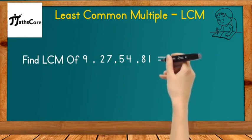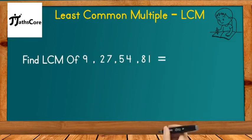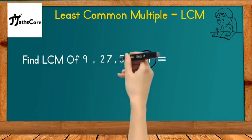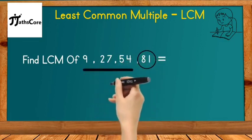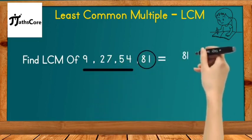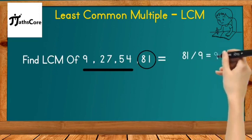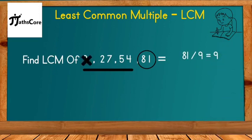As in the previous example, we follow the same procedure. Select the biggest number and check if it's a multiple of the remaining numbers. Let's take 81 and divide it by the first number, 9. 81 divided by 9 equals 9, so 81 is a multiple of 9.